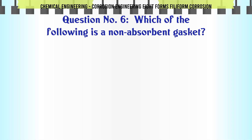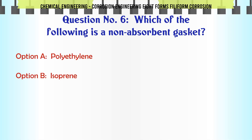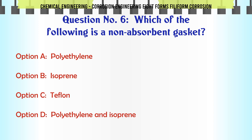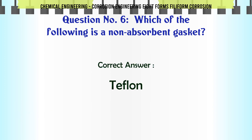Which of the following is a non-absorbent gasket? a. Polyethylene. b. Isoprene. c. Teflon. d. Polyethylene and isoprene. The correct answer is c: Teflon.